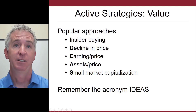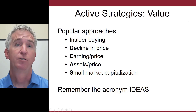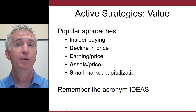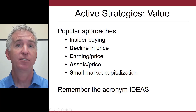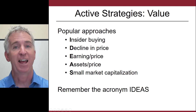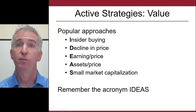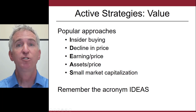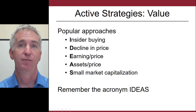What about the E in IDEAS? That's buying earnings at a favorable ratio to the market price — you want to buy earnings cheaply. The A is buying assets cheaply, so you want to look at assets as a ratio of price. And the final S: small market cap stocks, also those undervalued by Wall Street, tend to offer higher performance. That's a starting point for ideas about how to implement a value screen.